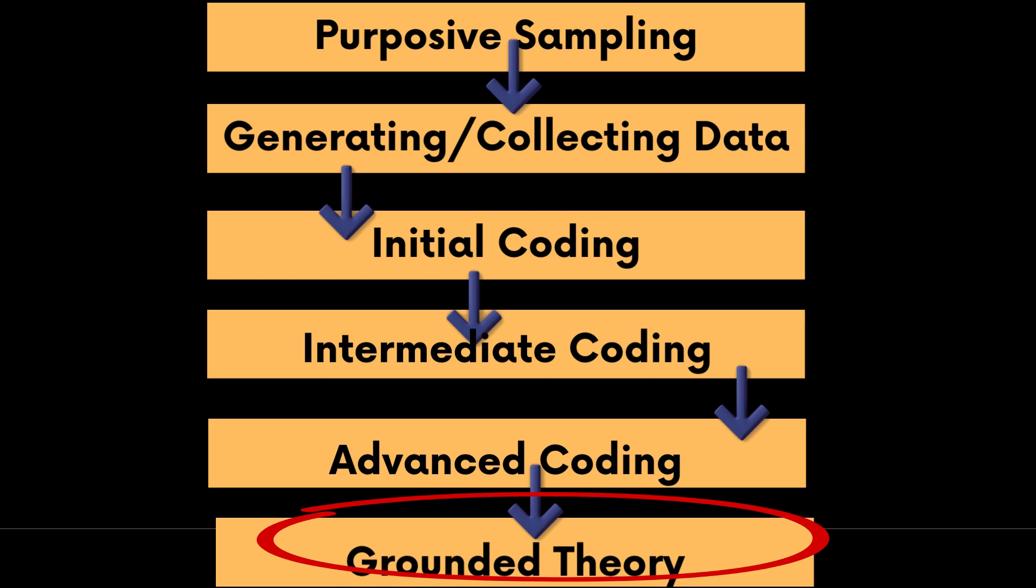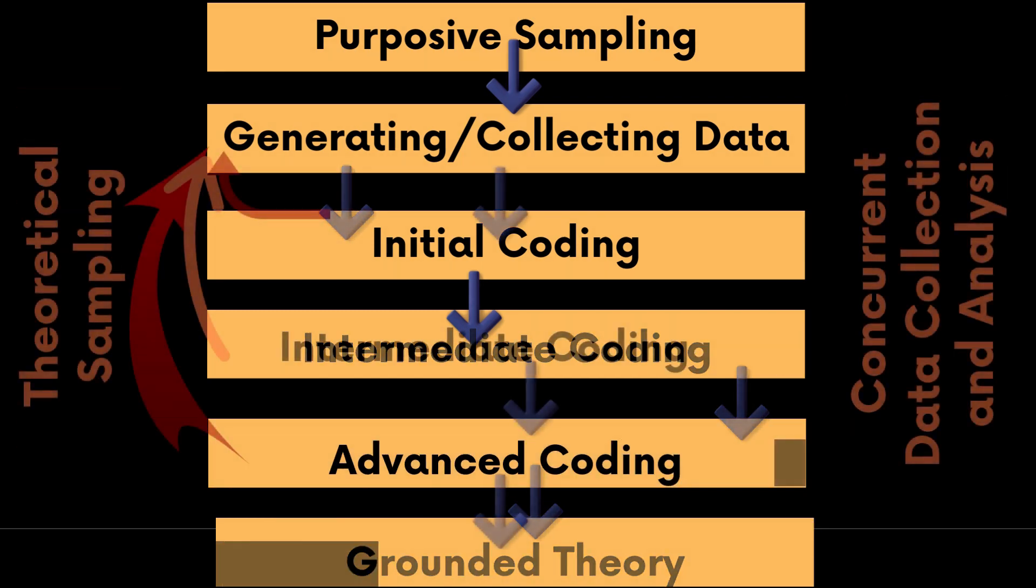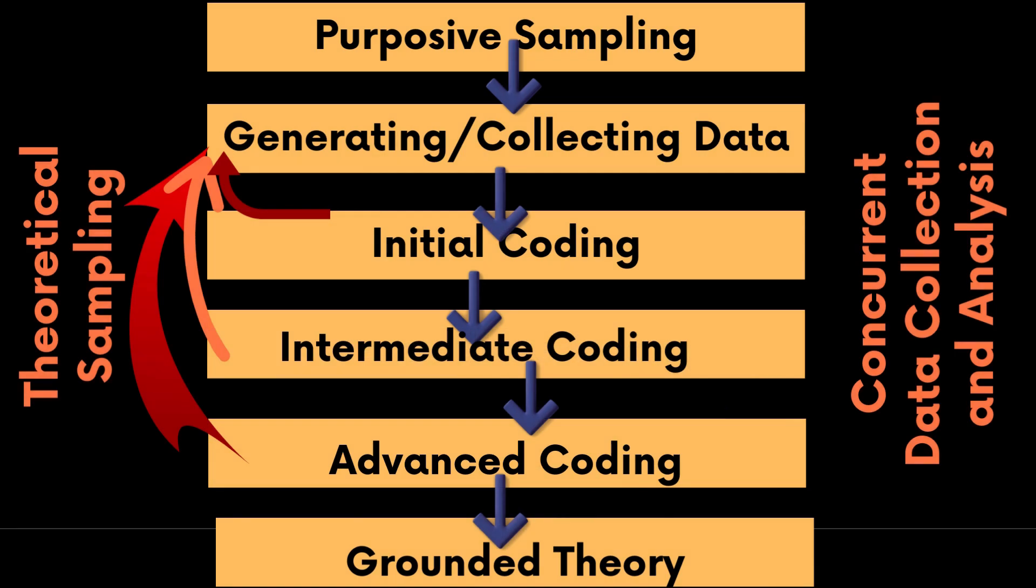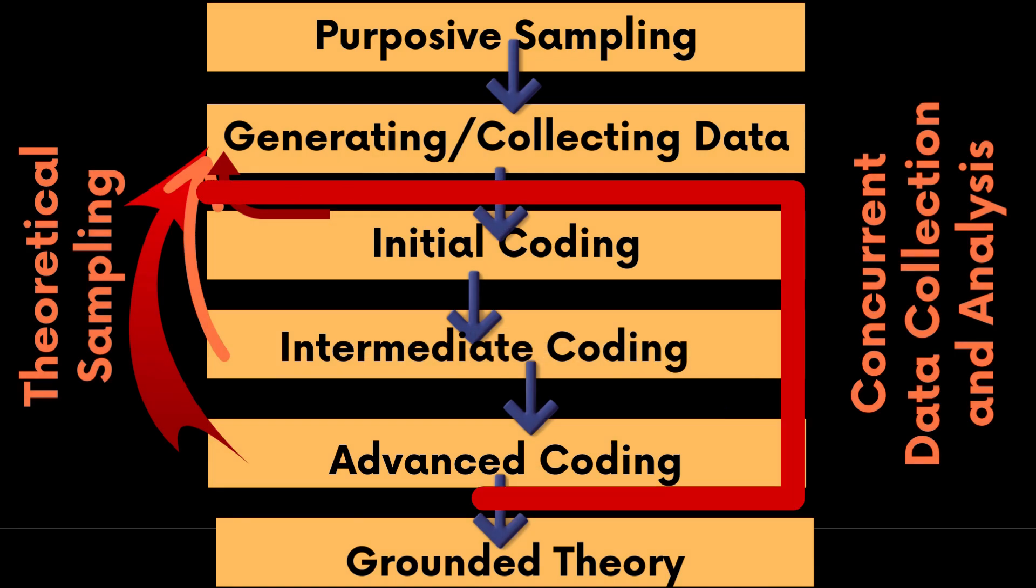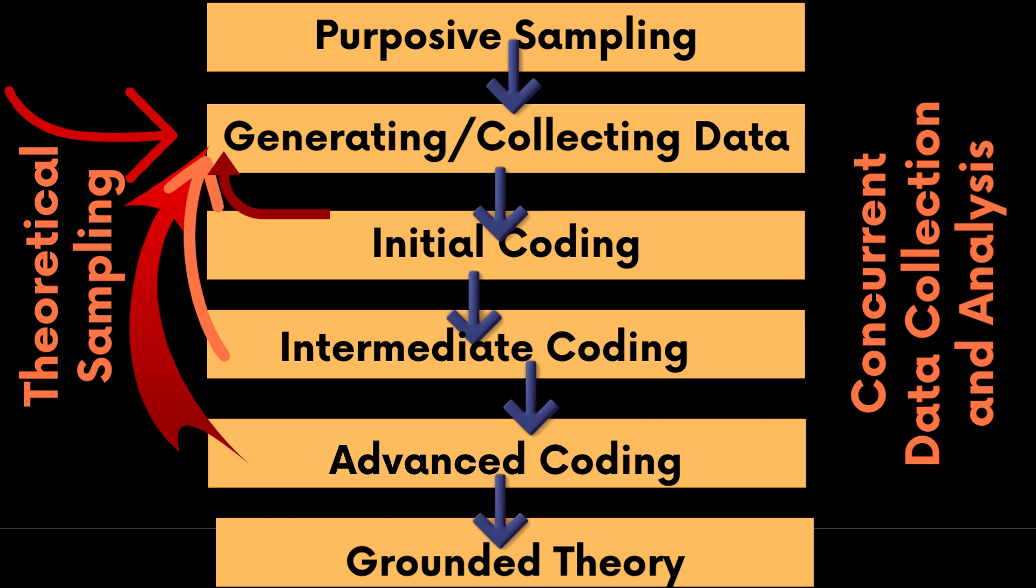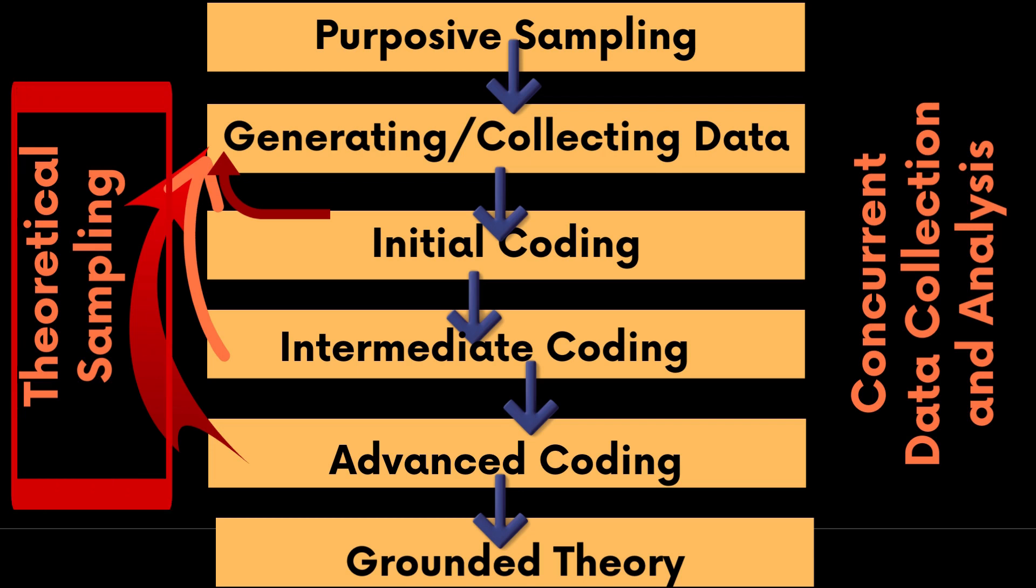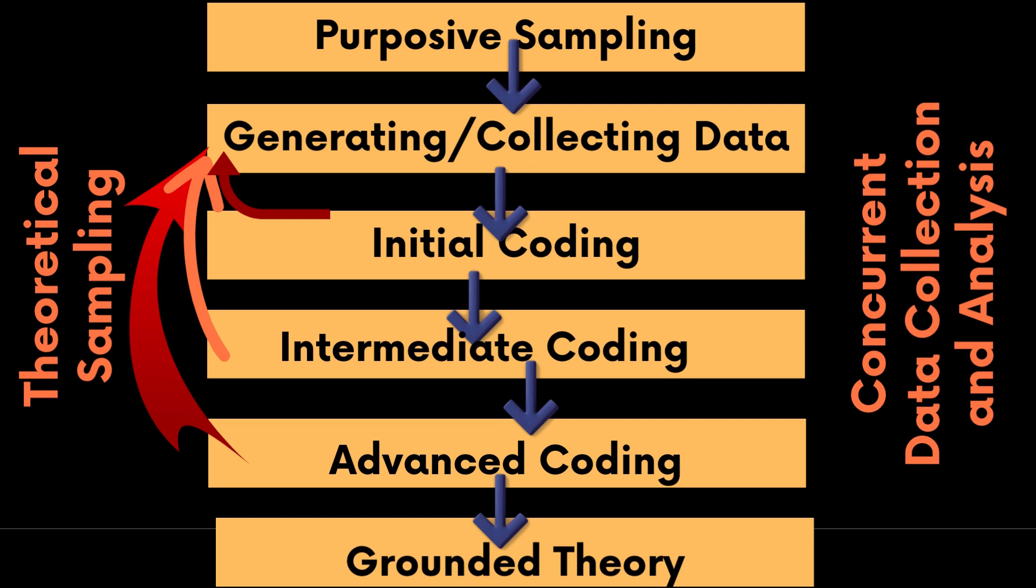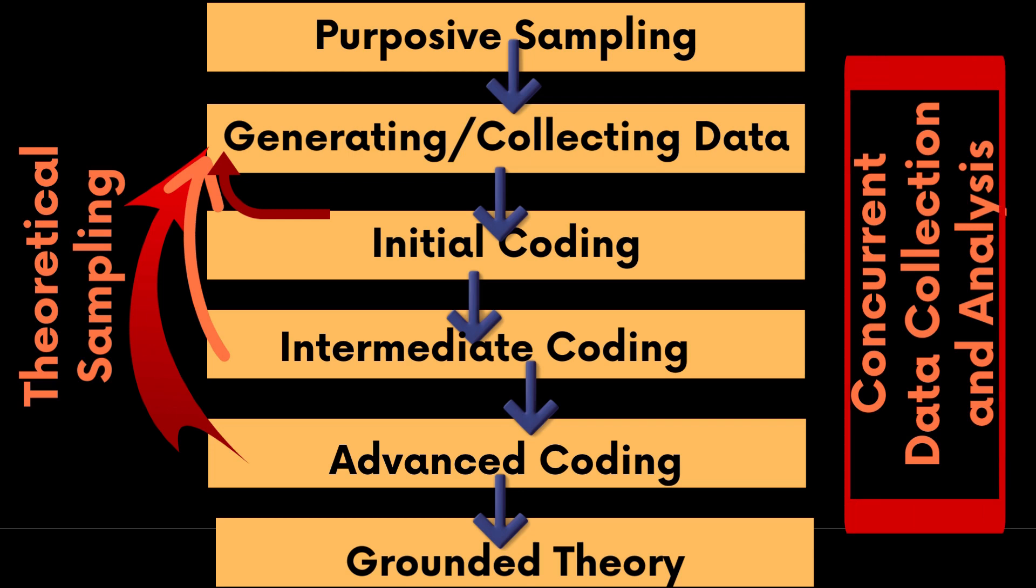This entire process is not linear. As we can see it involves iterations. There are repetitions of the same things again and again. Process of advanced coding, intermediate coding and initial coding can go back to generating new data depending on the theoretical sampling and this goes on simultaneously.